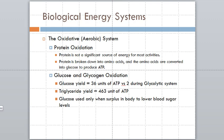Protein is not a significant source of energy for most activities — the body does not like to use it for fuel. If there's sufficient fat or sugar, the body will not use protein for fuel. Excess protein is converted to sugar first and then fat, and typically protein enters the glycolytic pathway as sugar.